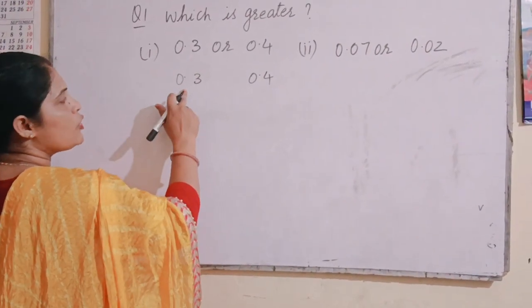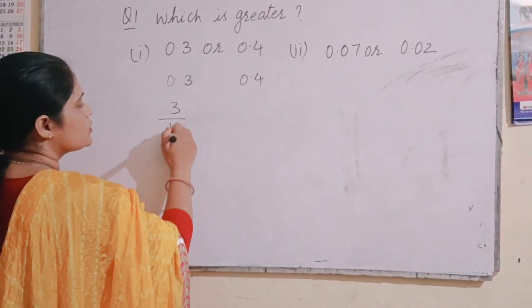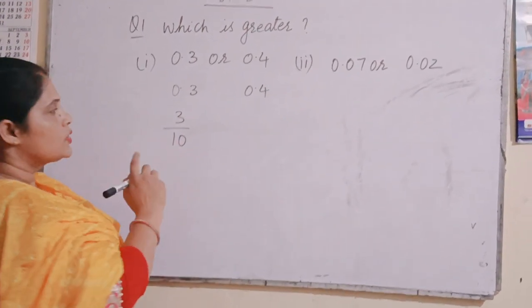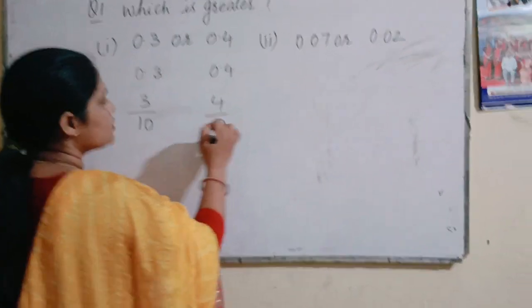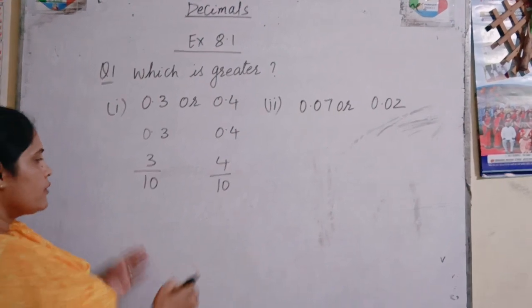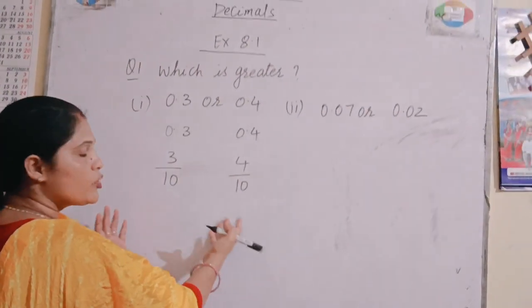3, so how many numbers are there after the decimal? 1. So I will put 1, 0 in denominator and here also I will put 1, 0 in denominator. Here we can see that denominators are equal. Same denominator is there.